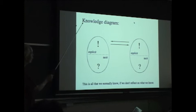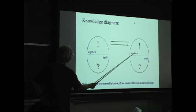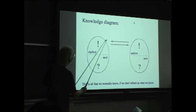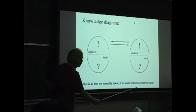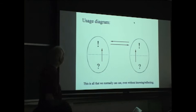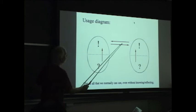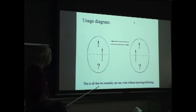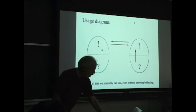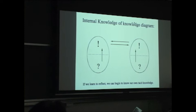So, if you make this knowledge diagram, then, from both sides, there is explicit and basic knowledge, one side and the other side. And normally, we only can exchange the explicit knowledge. This is all that we normally know, if we do not reflect on what we know. So, the usage diagram is different from the knowledge diagram. We can use our own tacit knowledge. We use it all the time. So, I use my knowledge. I exchange it with somebody else. The other person also uses their knowledge. So, this is all that we normally can use, even without knowing or reflecting on it.